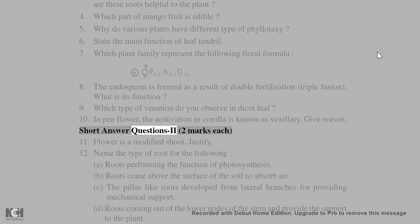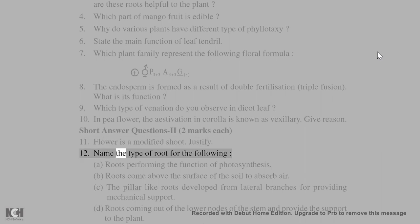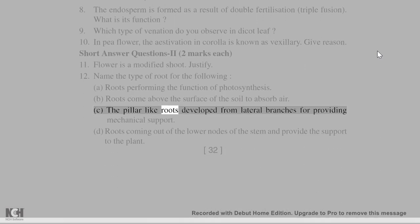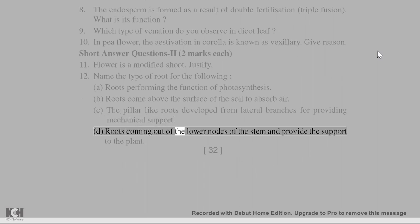Short answer questions (2 marks each): 11. Flower is a modified shoot — justify. 12. Name the type of root for the following: A. Roots performing the function of photosynthesis. B. Roots that come above the surface of the soil to absorb air. C. Pillar-like roots developed from lateral branches for providing mechanical support. D. Roots coming out of the lower nodes of the stem to provide support to the plant.